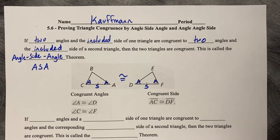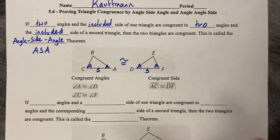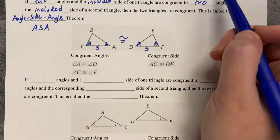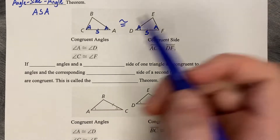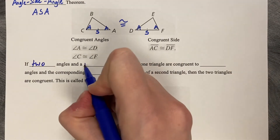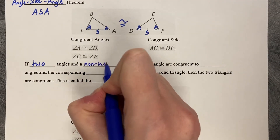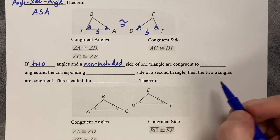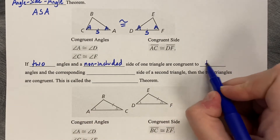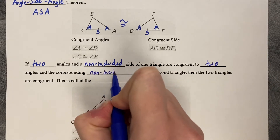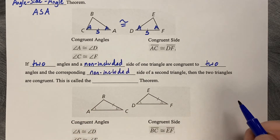The second congruence theorem we're talking about today is angle-angle-side. So when you're coming around the triangle, you've got two angles and then a side. If two angles and a non-included side — one that's not between them — of one triangle are congruent to two angles and a non-included side of a second triangle, then the two triangles are congruent.